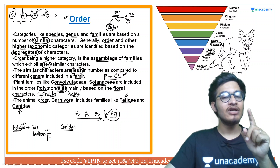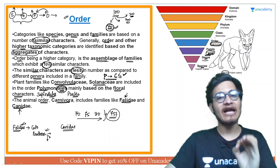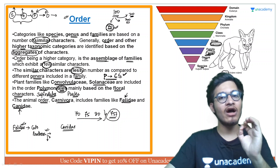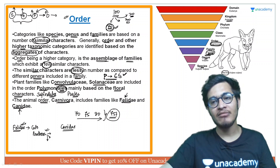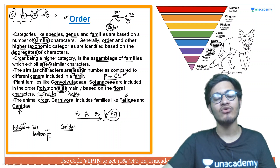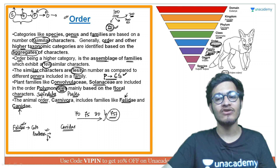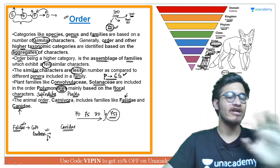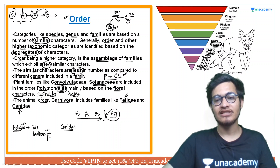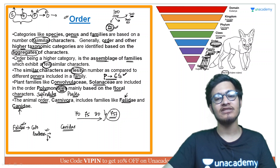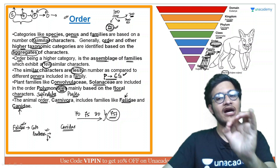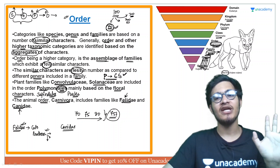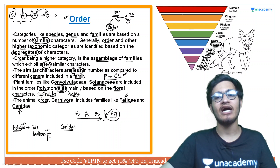When you write the classification for cat, tiger, or dog, you will write Kingdom Animalia, Phylum Chordata, Class Mammalia, Order Carnivora for all of them. The difference comes at the family level: for cat it will be Felidae, for dog it will be Canidae — and below that their scientific names (genus and species, e.g., Panthera tigris) will appear. This gives you the complete binomial nomenclature hierarchy.